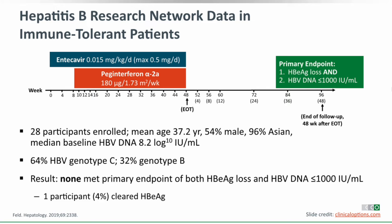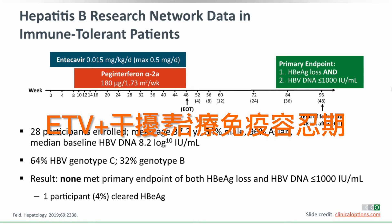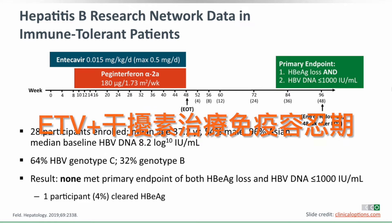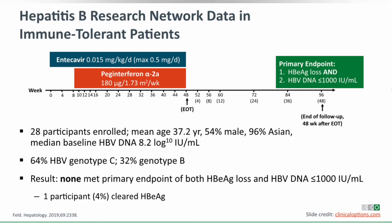Some have suggested that immune-tolerant patients may require immunomodulatory therapy for good treatment benefits. One study from the Hepatitis B Research Network used the combination of entecavir and peginterferon for 48 weeks in immune-tolerant patients — median age 37, median baseline HBV DNA 8 logs. Looking at the primary endpoint of 48 weeks after treatment, none of the patients achieved e-antigen loss with HBV DNA under 1,000. Achieving desired endpoints in immune-tolerant patients is difficult.